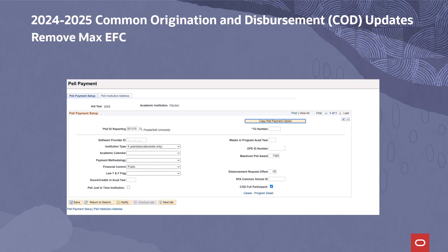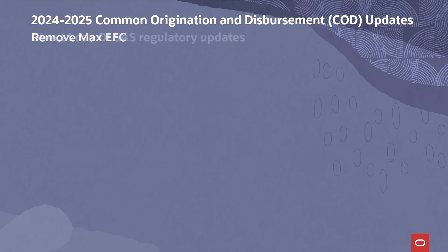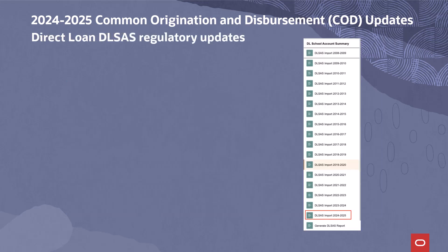The Pell Origination COBOL has been modified to remove the Max EFC field from evaluation in the origination process. People Code changes have been delivered to hide the Max EFC field, effective Aid Year 2025 and forward. Updates have been delivered for the Direct Loan DLSAS regulatory updates.